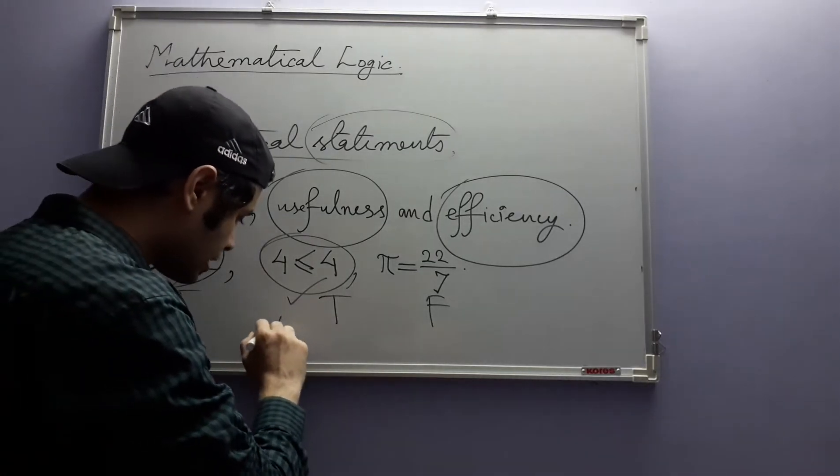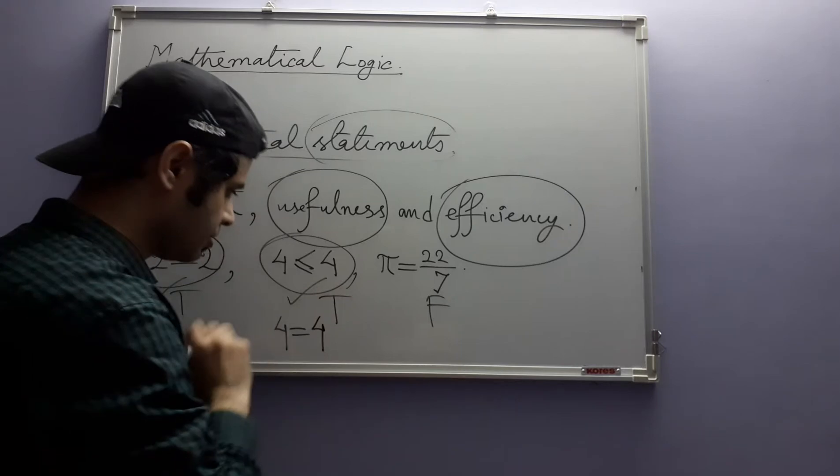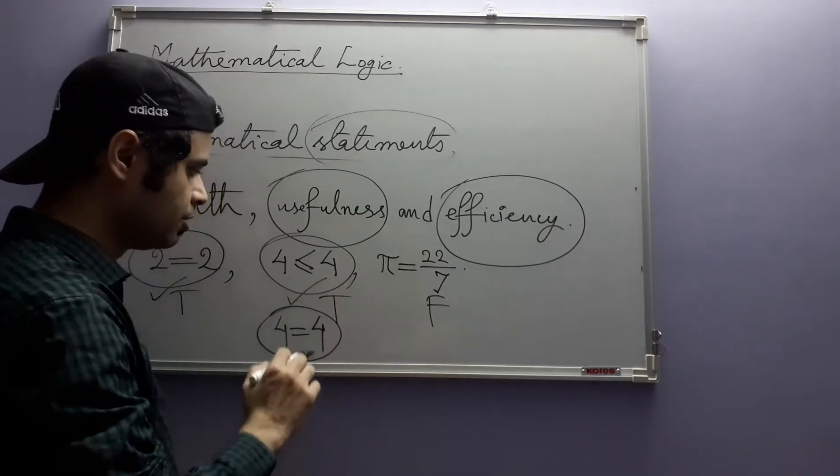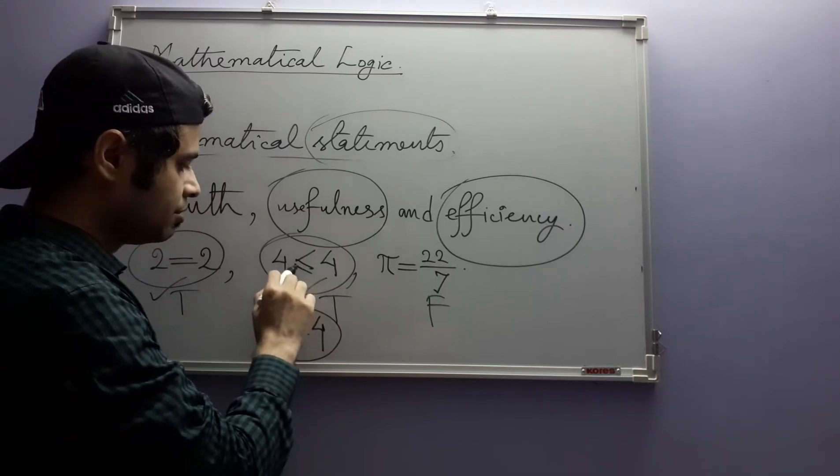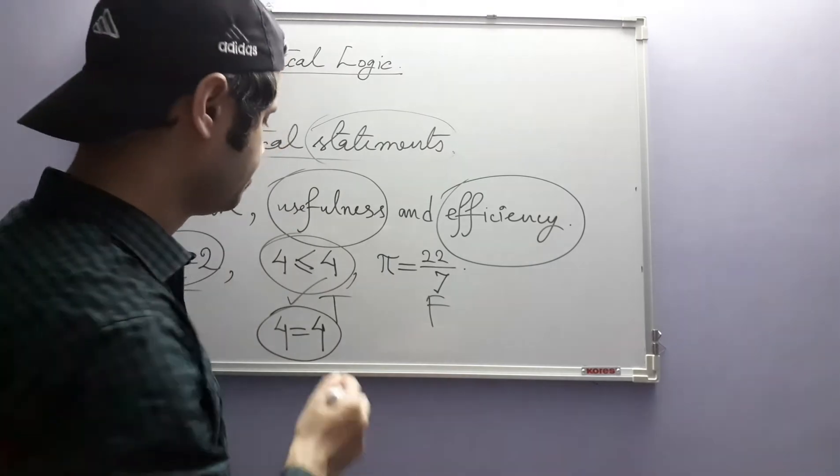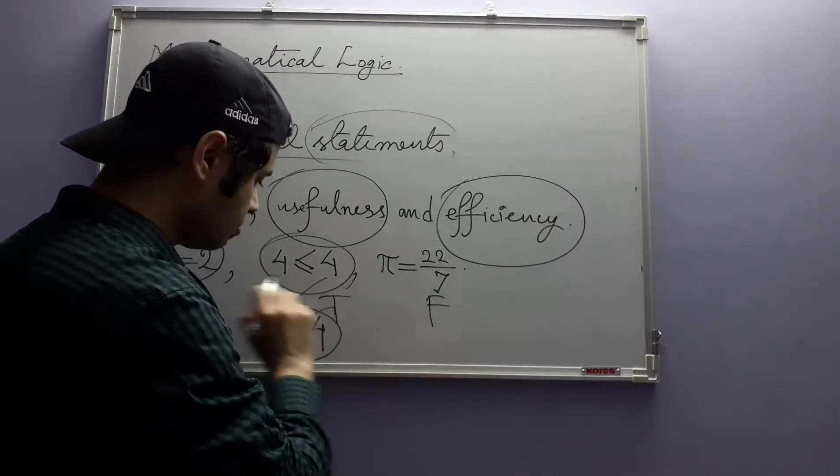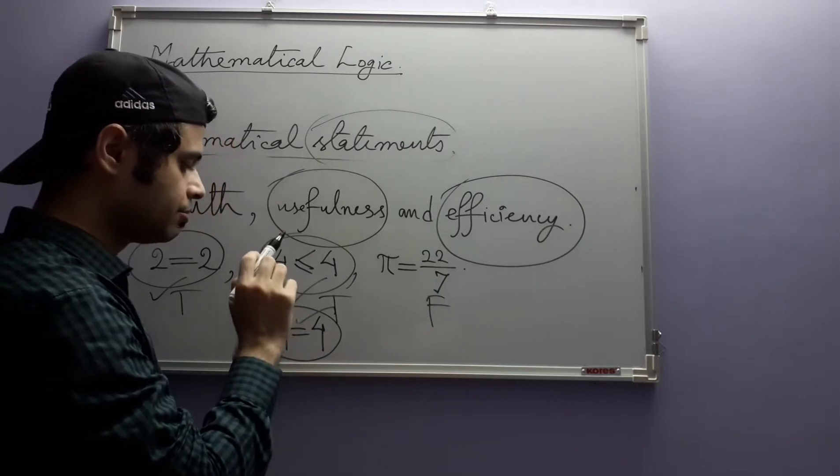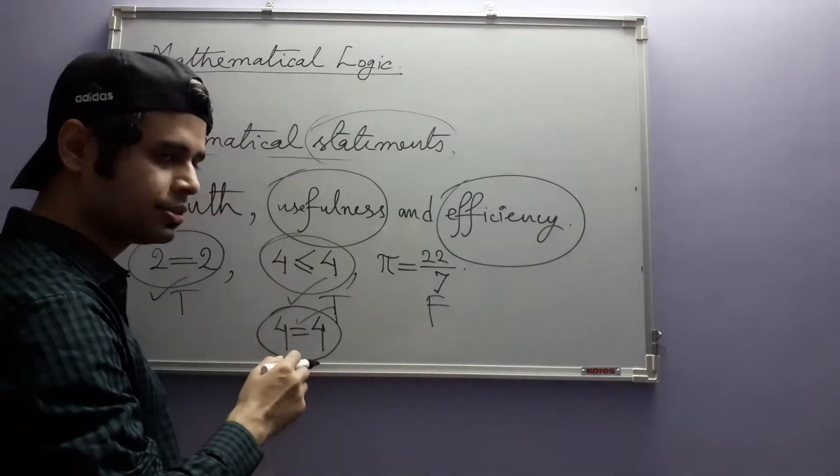A stronger statement is 4 is equal to 4. Because we really know that 4 is equal to 4, we do not have to be so vague that 4 is less than or equal to 4. So this is stronger, although less useful, still less useful.